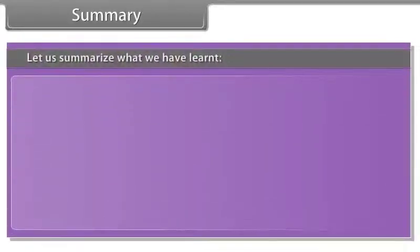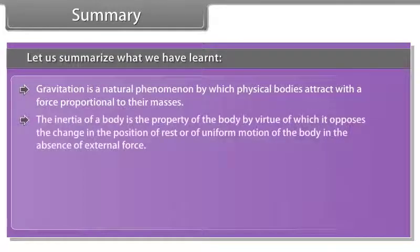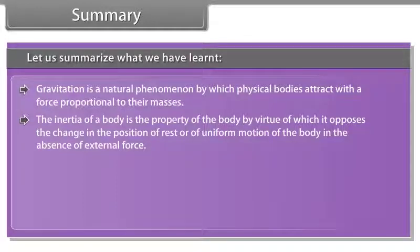Summary: Gravitation is a natural phenomenon by which physical bodies attract with a force proportional to their masses. The inertia of a body is the property by virtue of which it opposes the change in the position of rest or of uniform motion in the absence of external force.